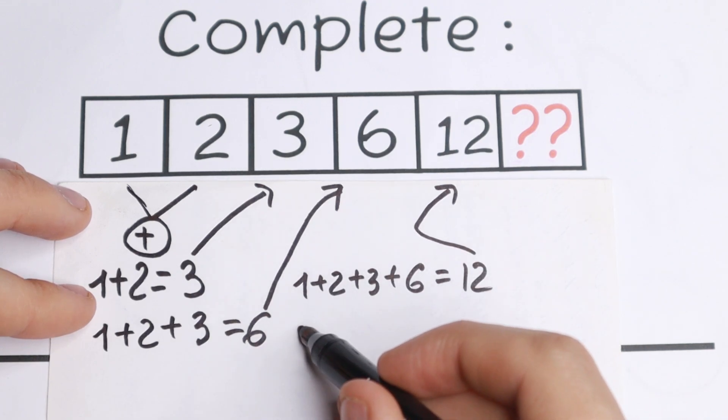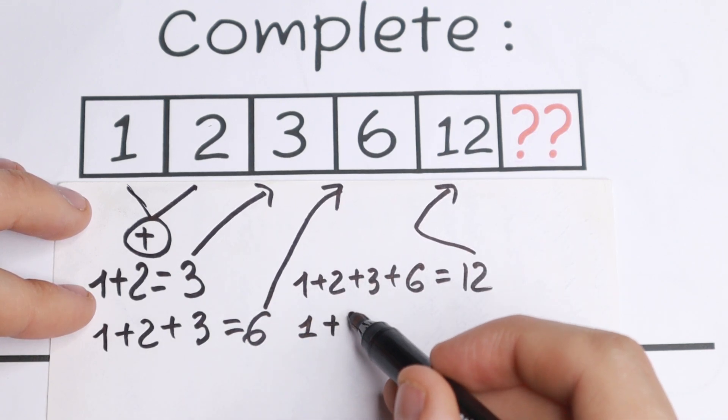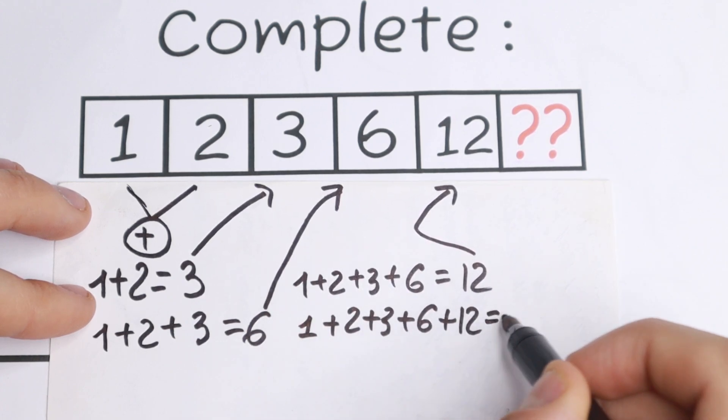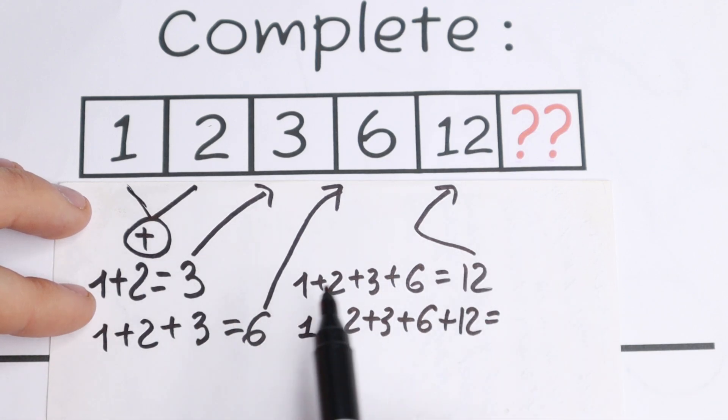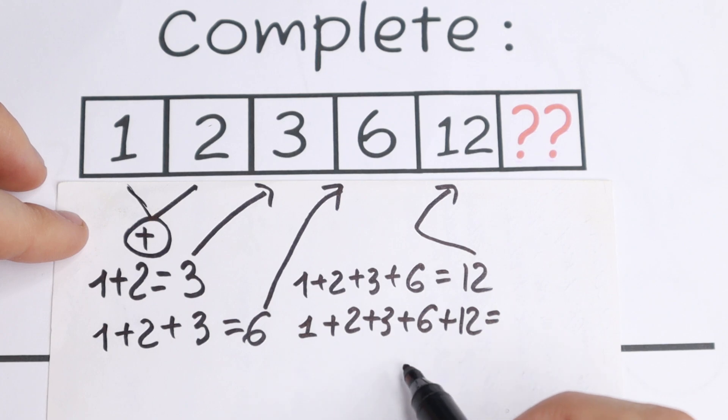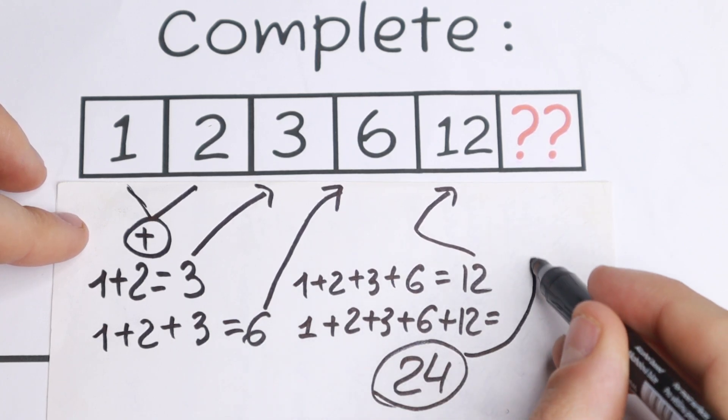So it's not hard to see that if we add all of these numbers, 1 plus 2 plus 3 plus 6 plus 12, we will have our case, because this is a pattern and it works with these numbers as well. So as a result we will have 12 plus 12, it will be 24. So our last number will be 24.